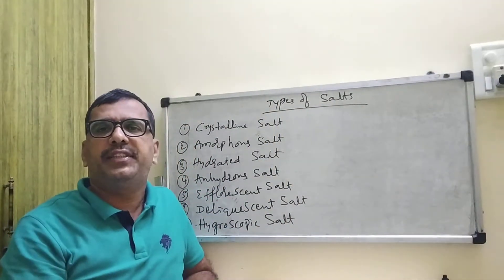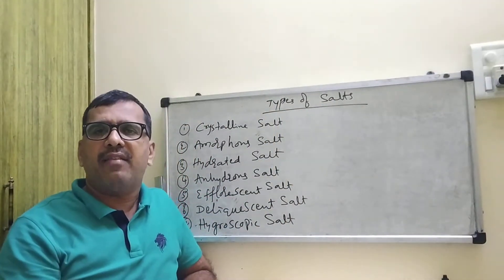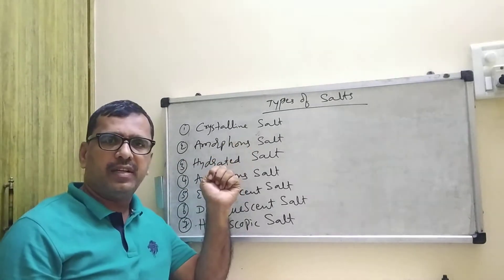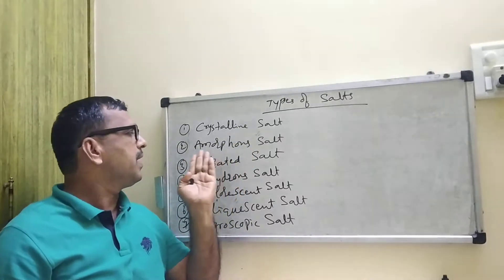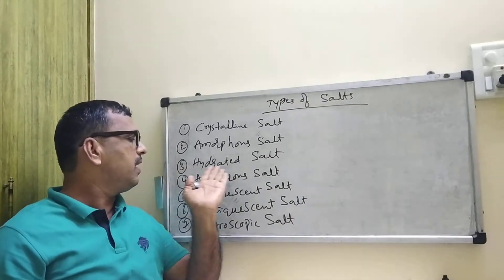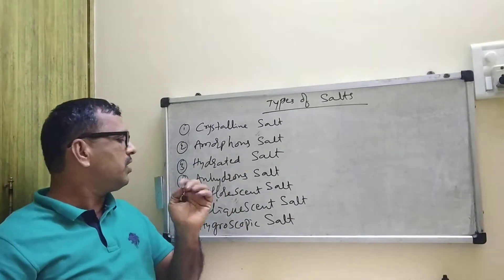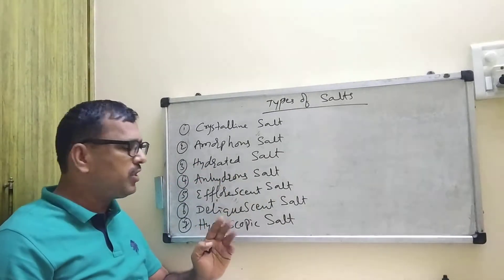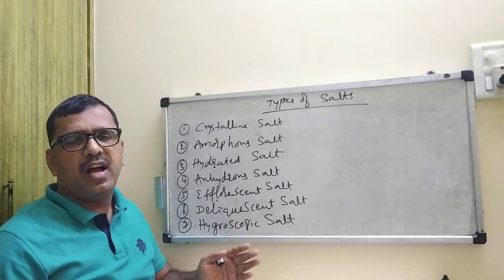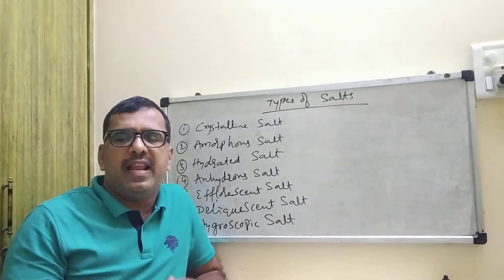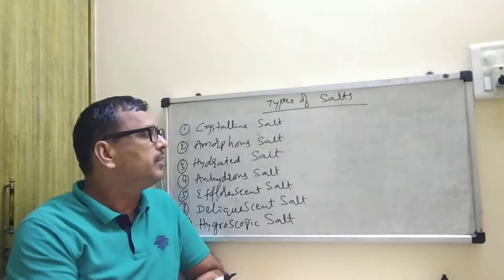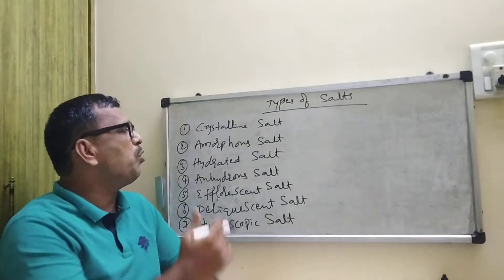Different types of salts are available in nature: crystalline salt, amorphous salt, hydrated salt, anhydrous salt, effluorescent salt, deliquescent salt, hygroscopic salt. Like this, different types of salts are available. First we will learn one by one.